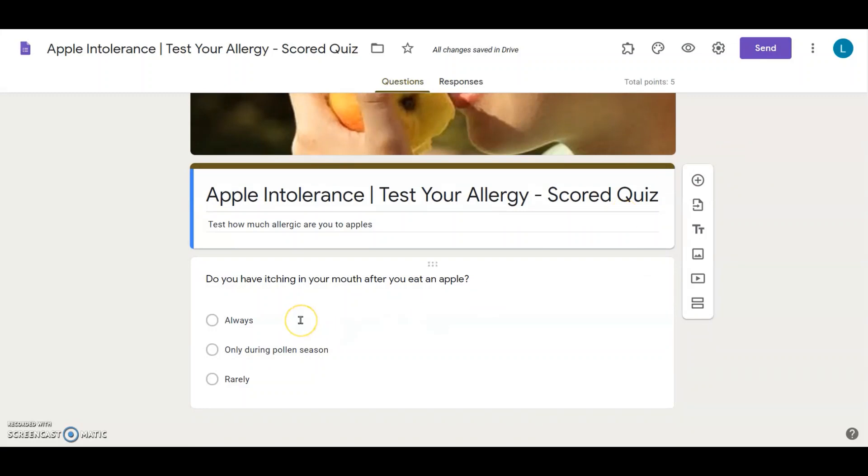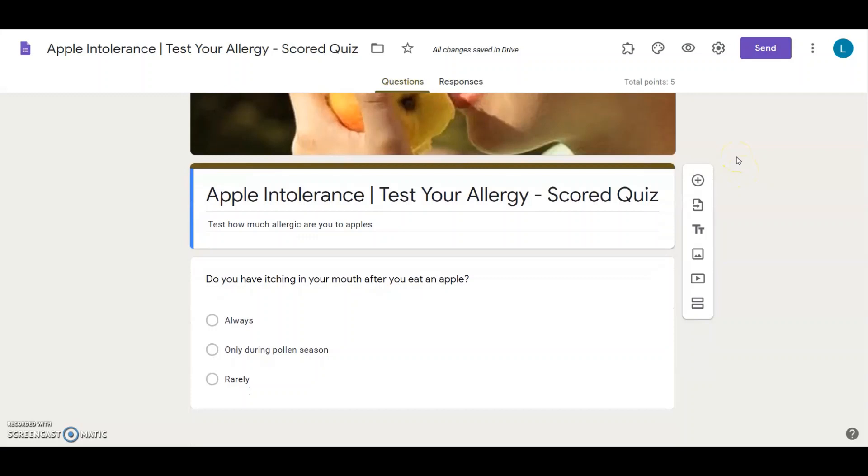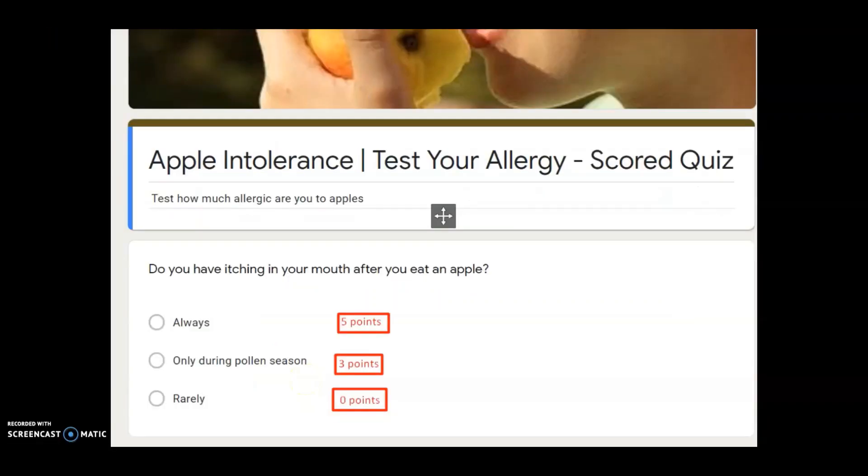For example, I want to know if my respondents are allergic to apples, so I ask them how often do you have itching in your mouth after you eat a raw apple. Out of my answer choices, some may say always, others may choose usually during peak pollen seasons. After collecting these responses, I want to score them differently based on their different answers. Let's say that five points is awarded for always and three points is awarded for only during pollen season. I can use this to calculate the severity of each person's allergy.